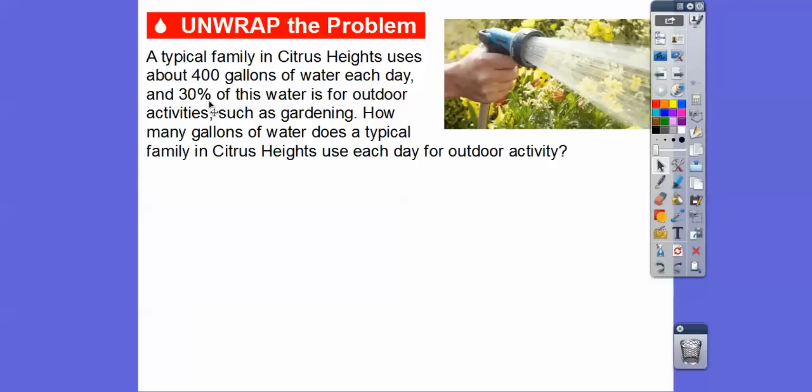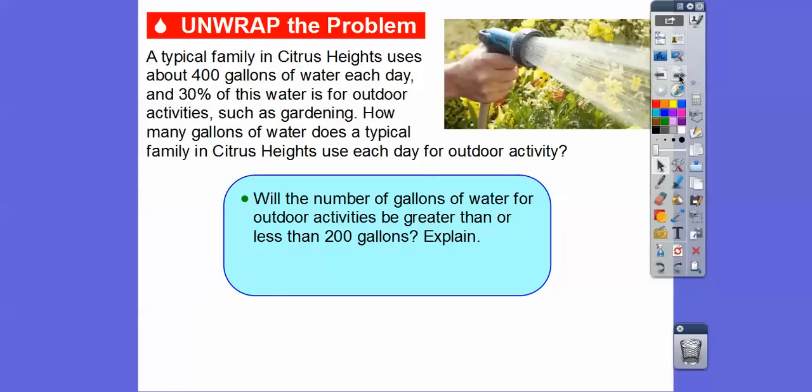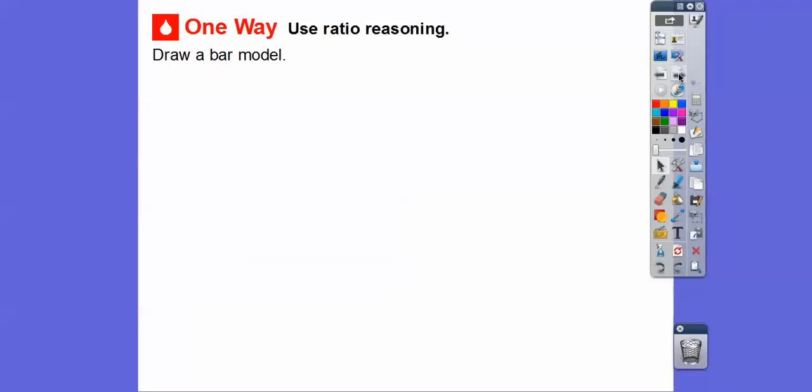So we're looking for 30% of the 400 for outside activity. Will the number of gallons of water for the outside activity be greater than or less than 200? Well, it's going to be less than 200 because 30% is what we're looking for, and that's less than 50%. 50% would be half, so since 200 is half - that's 50% - and we're only looking for 30%, it's definitely going to be less than that.